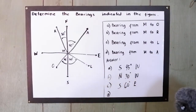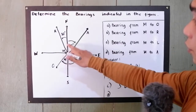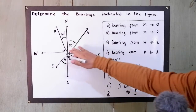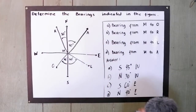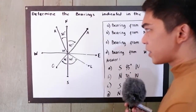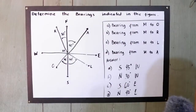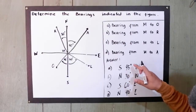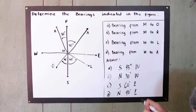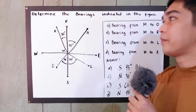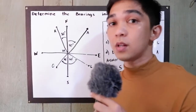And last, bearing from M to A: that is 40 degrees east of north. Always remember that our reference is the north-to-south line. So our answers are: 45 degrees west of south, 30 degrees west of north, 60 degrees east of south, and 40 degrees east of north. That is example and problem number one.